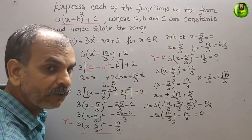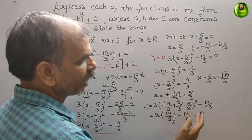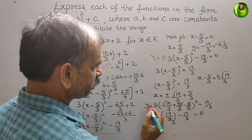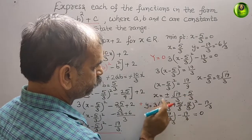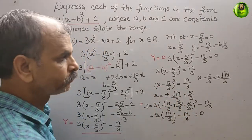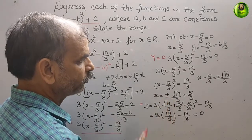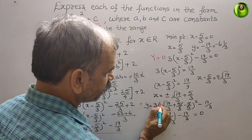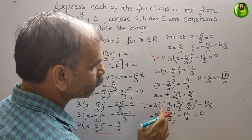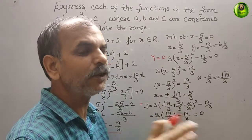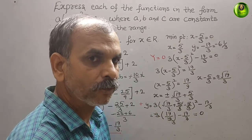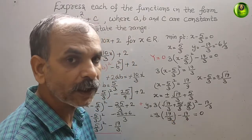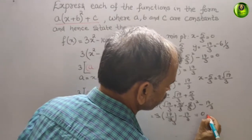Taking the minus value as well: if we substitute x = -√19/3 + 5/3, the 5/3 terms cancel similarly, giving 3 × 19/9 - 19/3 = 0. So y = 0 again in both cases. Therefore the two x-intercepts both give y = 0.